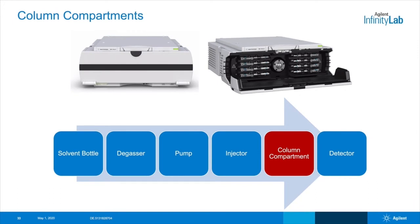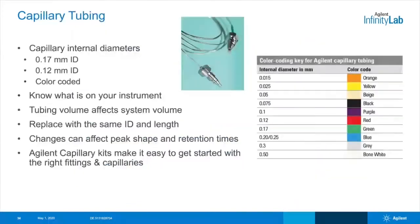Next in the flow path is the thermostatted column compartment, where the column is installed. Not much routine maintenance is really required here, but we're still working with columns, capillaries, and fitting connections. There are many dimensions and lengths for capillary tubing. Most Agilent LC systems primarily use 0.17 or 0.12 millimeter ID tubing. Smaller ID tubing is used for higher pressure UHPLC systems to ensure minimal system volume to avoid band spreading. Agilent tubing is color-coded by ID for easy identification. Capillary kits can make it easy to find the right tubing and fitting combinations.